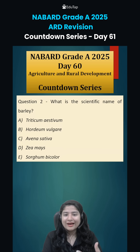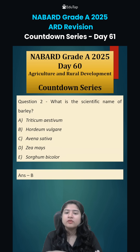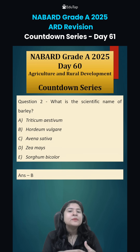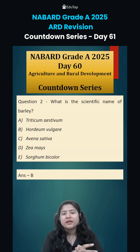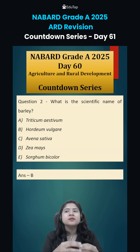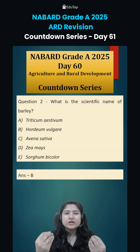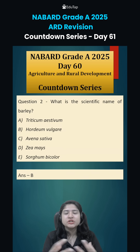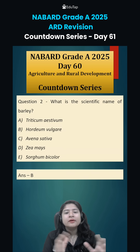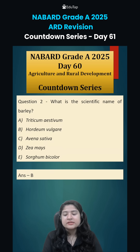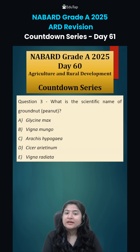Coming to question number 2, what is the scientific name of Barley? Barley, which is Hordeum vulgare, belongs to the Graminae or Poaceae family. It can be grown in drought-like conditions and is also tolerant to salinity in soil.